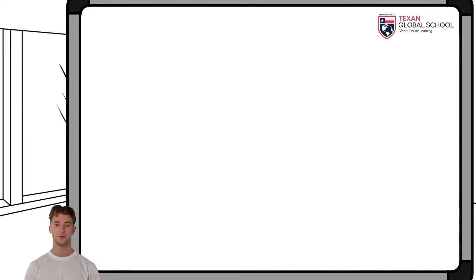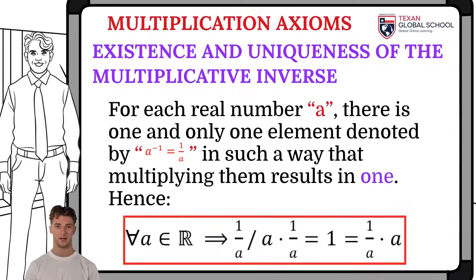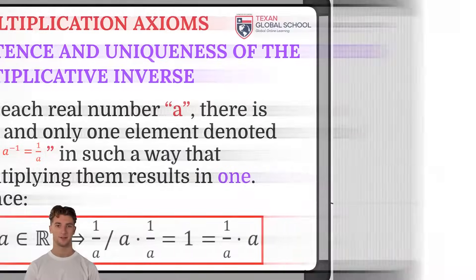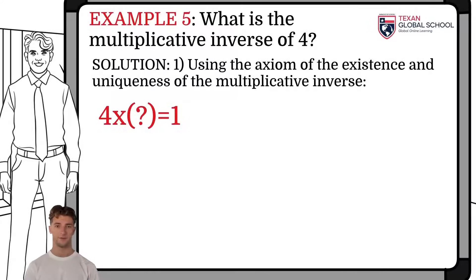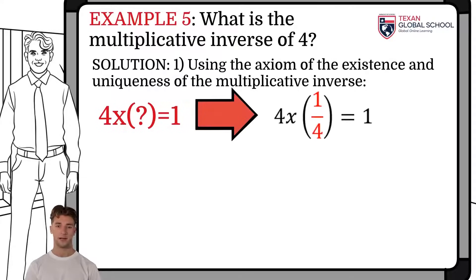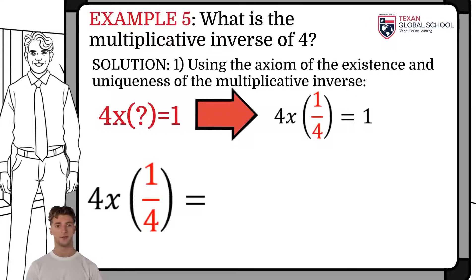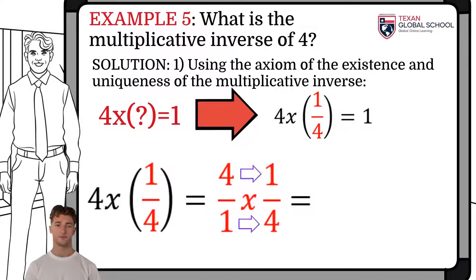The last axiom of multiplication indicates that, for each real number a, there is one and only one element denoted by a to the negative one, or one over a, such that when multiplying them, the result is one. In this last example, we are asked to find the multiplicative inverse of four. The multiplicative inverse of four must be a number that, when multiplied, results in one. The only such number is one-fourth. To verify, we multiply four by one-fourth. Remember that four, as a whole number, by definition is divided by one — so we have two fractions multiplied.